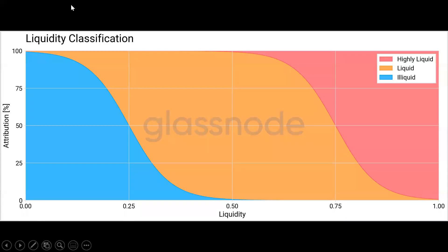Next, we're looking at liquidity classification. In the first video we talked about long-term holders and the 155-day cutoff between short and long-term holders, and the 20-day smoothing window so you don't get big outliers when an entity crosses over the threshold. There's a very similar smoothing factor here with supply liquidity — showing when supply is moving between the different cohorts based on when an entity's spending behavior is being adjusted.